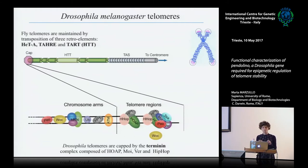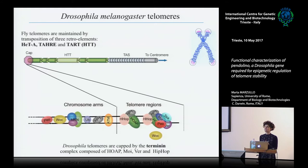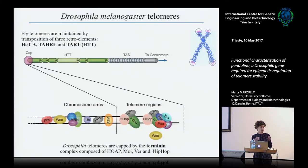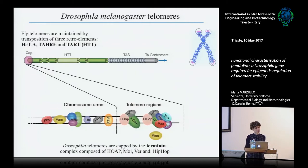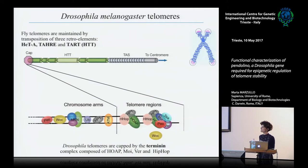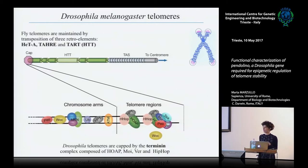Drosophila telomeres are a little different from mammalian telomeres because, during evolution, the telomerase has been lost and chromosome length maintenance is mediated by the transposition of three retroelements: HeT-A, TART, and TAHRE. But the capping process is conserved because also in Drosophila there is a protein complex, the functional analog of shelterin, named terminin. Terminin is composed of four proteins: HOAP, HipHop, Moi, and Ver, which, like shelterin components, mainly localize and function at telomeres during all the cell cycle. In addition to terminin in Drosophila and shelterin in mammals, there are also other proteins involved in telomere maintenance but with other cellular functions, such as the MRN complex, the kinase ATM, the protein HP1, and also the protagonist of my project, Pendolino.